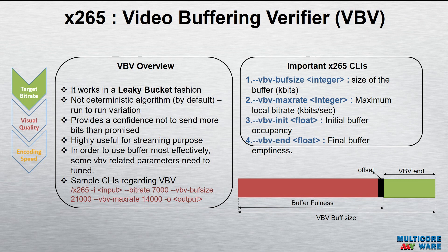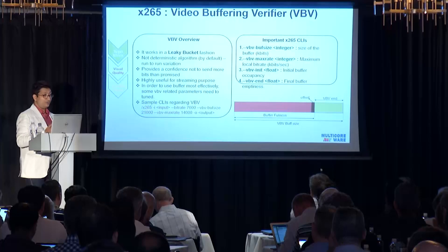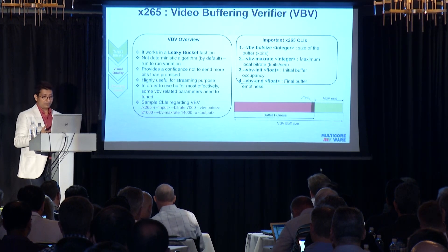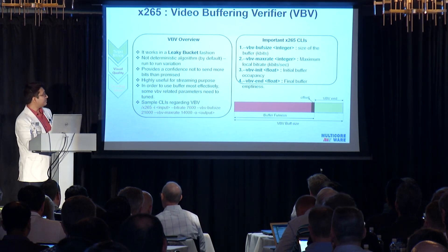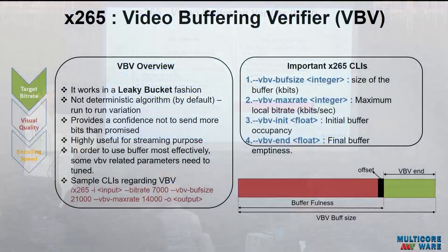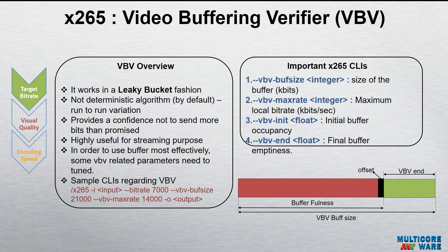VBV stands for Video Buffering Verifier. It works in a leaky bucket fashion — you have a buffer, bits are coming in, and you know what the target bit rate at the output should be. The problem is that it's not a deterministic algorithm by default, so results may vary run to run. However, it provides a guarantee not to spend more bits than promised in the initial phase. It is not deterministic, but there are techniques to get the maximum utilization of the buffer. Honestly, VBV is the most useful approach for any streaming purpose.